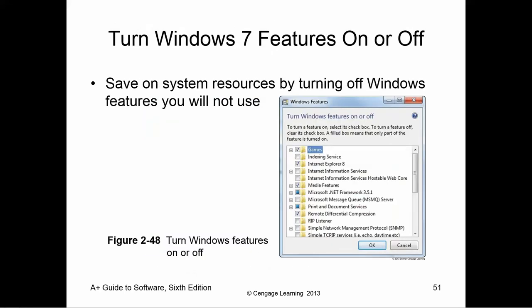Let's talk about features you can turn on or off. Some features are enabled by default, some are turned off by default. Go to Programs and Features, then on the left side click Turn Windows features on or off, and select which ones you want on or off. For example, you could turn off games.